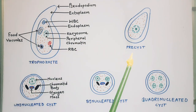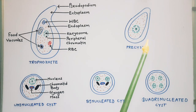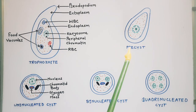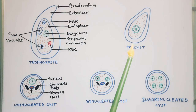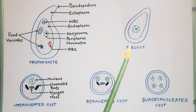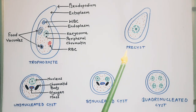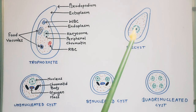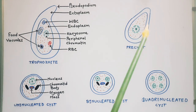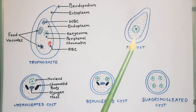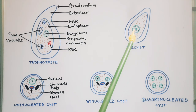The pre-cyst is the intermediate stage between the trophozoite and cyst. It is smaller than the trophozoite but larger than the cyst, measuring 10 to 20 micrometers in diameter. It is oval with blunt pseudopodia. Food vacuoles and red blood cells disappear at this stage. Nuclear structures are the same as those of the trophozoite.